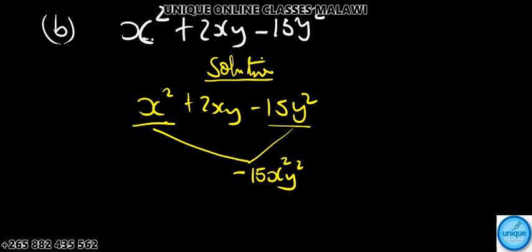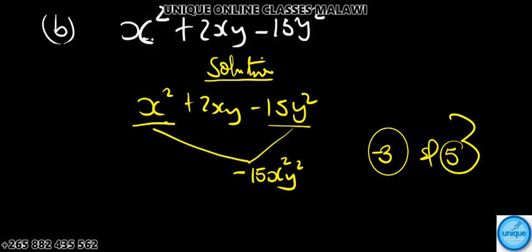The factors of 15 are three and five. One will be negative and the other positive, so instead of writing it as 2, we'll express it in the factors.